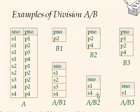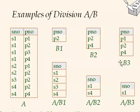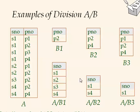So for A divided by B2, the answer is S1 and S4 — these are the providers that supply all parts in B2, which are P2 and P4. For A divided by B3, which contains P1, P2, and P4, S1 is the only provider that supplies all three parts. S1 provides other things too, but that does not disqualify it.